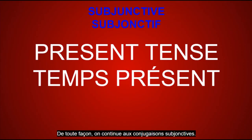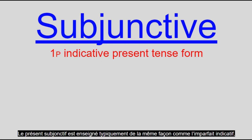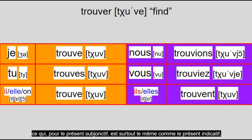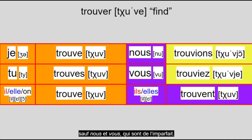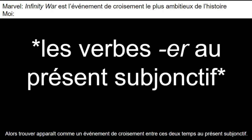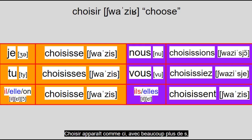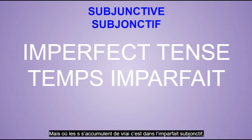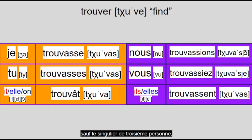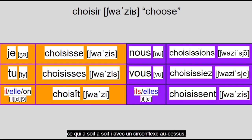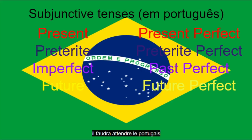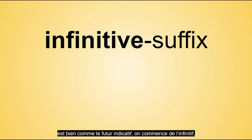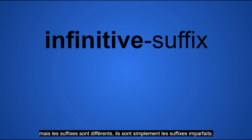On to the subjunctive conjugations. The subjunctive present is typically taught the same way as the indicative imperfect — where you take the first-person plural of the verb, drop -ons, and add the ending, which for the subjunctive present is mostly the same as for the indicative present except for nous et vous, which are from the imperfect. So trouver looks like a crossover event between those two tenses in the subjunctive present. Choisir looks like this with a lot more S's, and perdre actually has the D pronounced with the E at the end now. Where the S's really pile up is in the subjunctive imperfect, except for third-person singular, which has either an A or E with a circumflex on top, followed by a T. There's no subjunctive future. Conjugating the conditional mood is much like the indicative future — you start from the infinitive, but the suffixes are basically the imperfect endings.